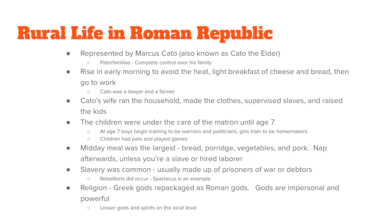Once lunch was done, you took a nap and woke up again when the sun had gone down a bit before the top of the afternoon. If you were a slave or if you were higher in rank, you didn't get that nap — you still had to work during the hot part of the day.